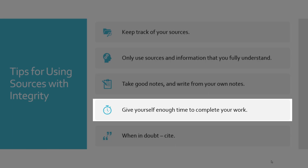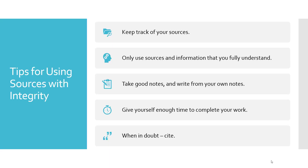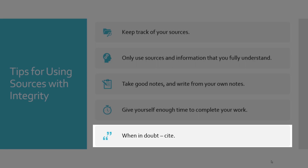Give yourself enough time to complete your work. Many cases of accidental plagiarism occur as a result of trying to finish a paper in too little time. The pressure to complete the work stops some people from taking steps to keep their work clean. When in doubt, cite. When you have any doubts about whether you should cite something or not, cite it.